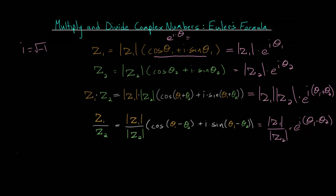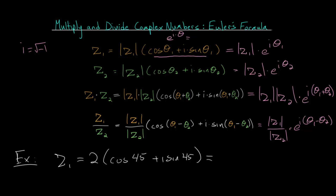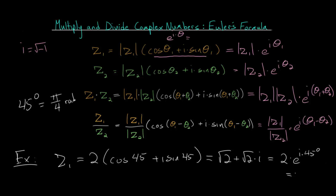Let's say we have an example where we will multiply two complex numbers and then divide them. Z1 has a magnitude of 2 and a direction — writing it in polar form first — of cosine of 45 degrees plus I times sine of 45 degrees. In rectangular form this is root 2 plus root 2 times I. In exponential form we write this as 2 multiplied by E to the I times 45 degrees, though usually this is written in radians. Since 45 degrees is pi over 4 radians, we can also write this as 2 times E to the I times pi over 4.